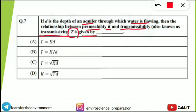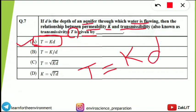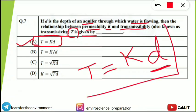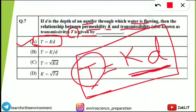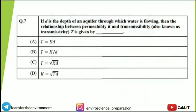The correct relationship is T = K × D. This formula is very important — transmissibility or transmissivity (T) equals permeability (K) multiplied by the depth of the aquifer (D). This question can also appear in numerical form. Remember: T = KD — think 'Kapil Dev,' who transformed India's cricketing history in 1983.